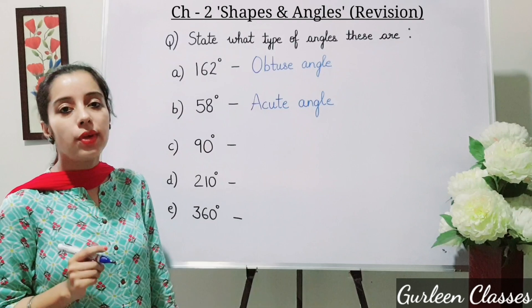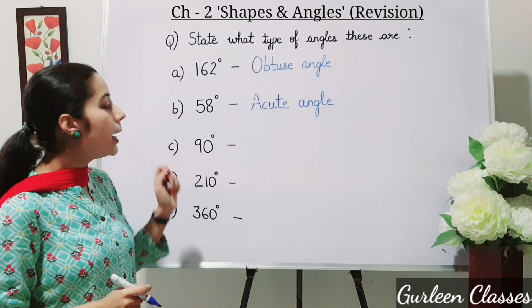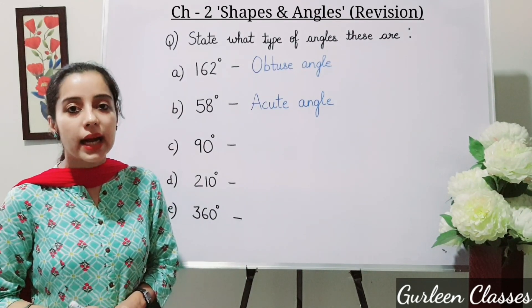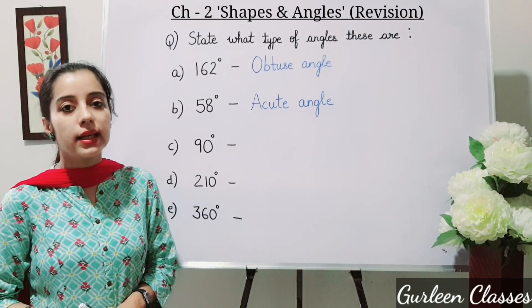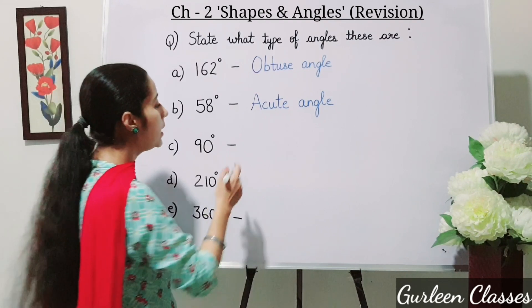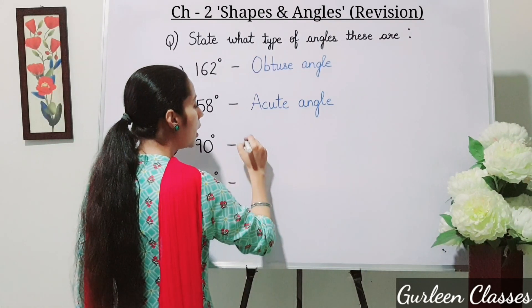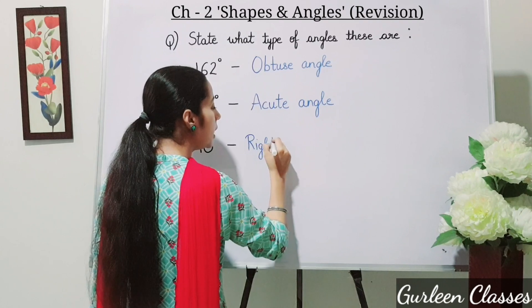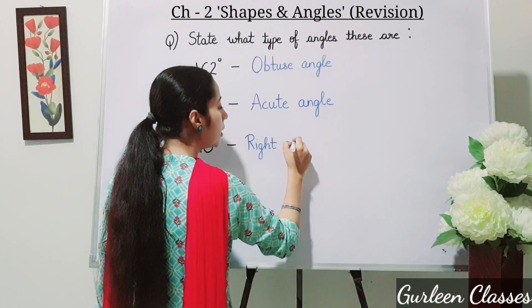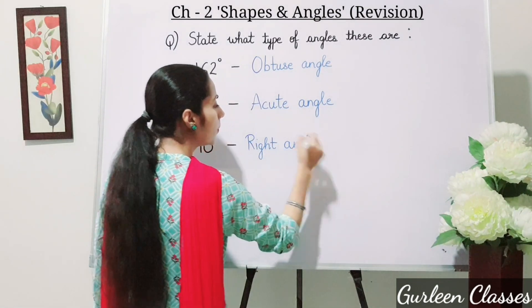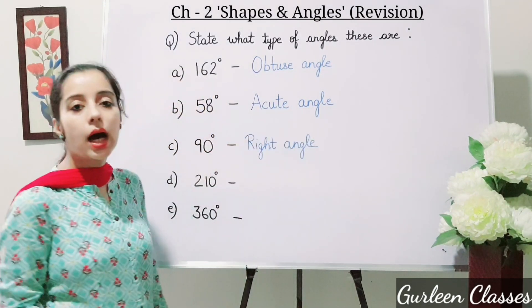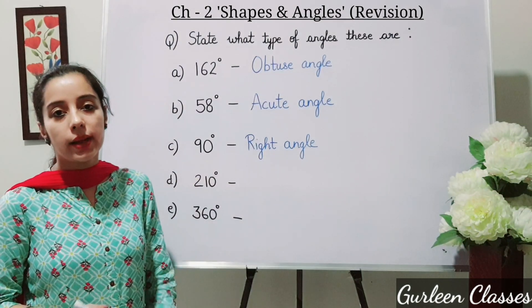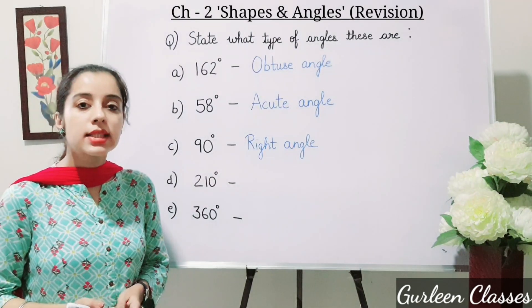Number three: 90 degrees. An angle that measures exactly 90 degrees is a right angle.